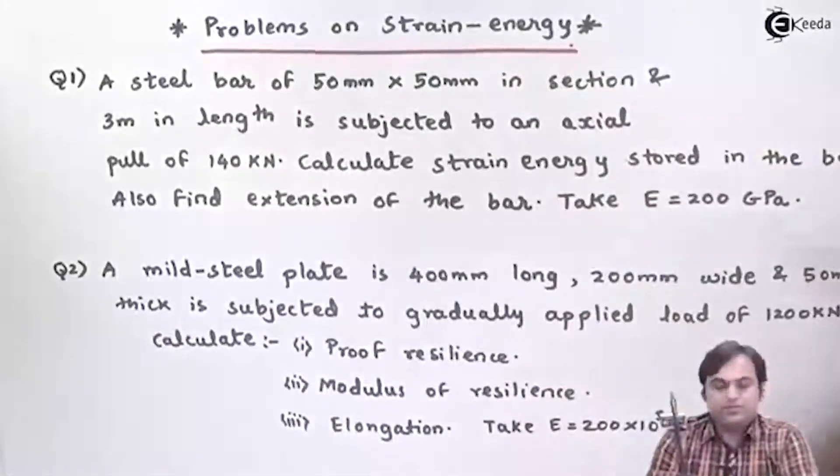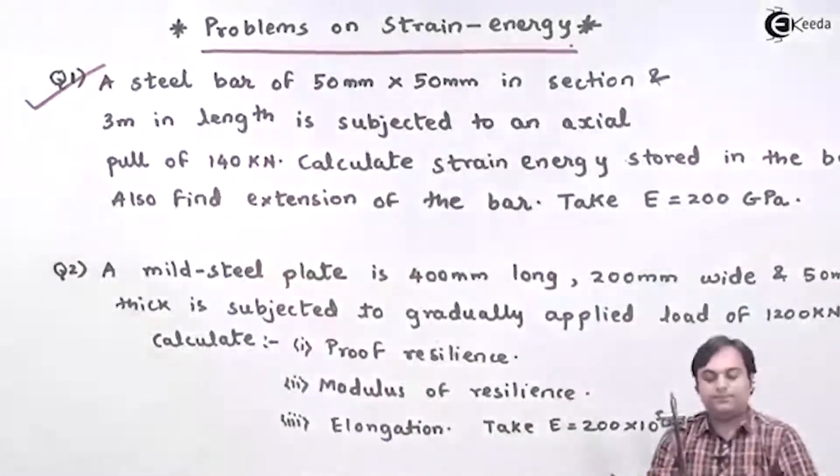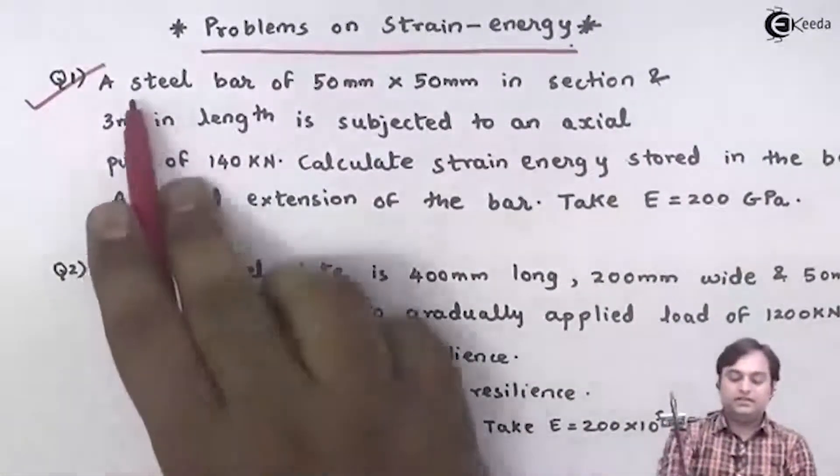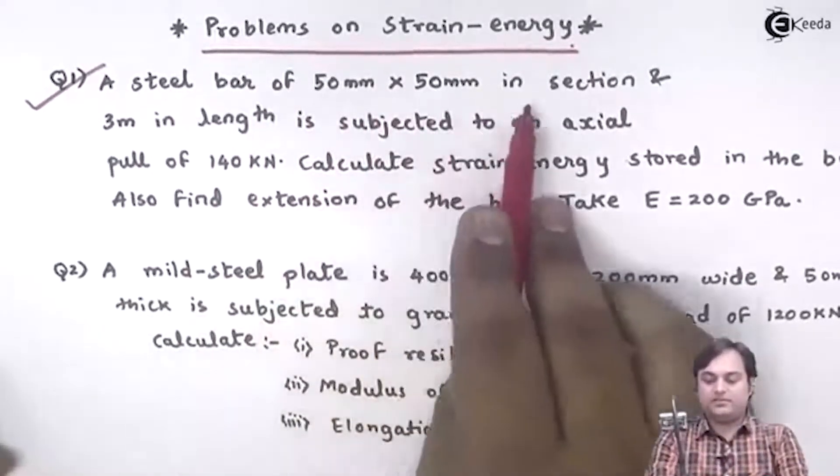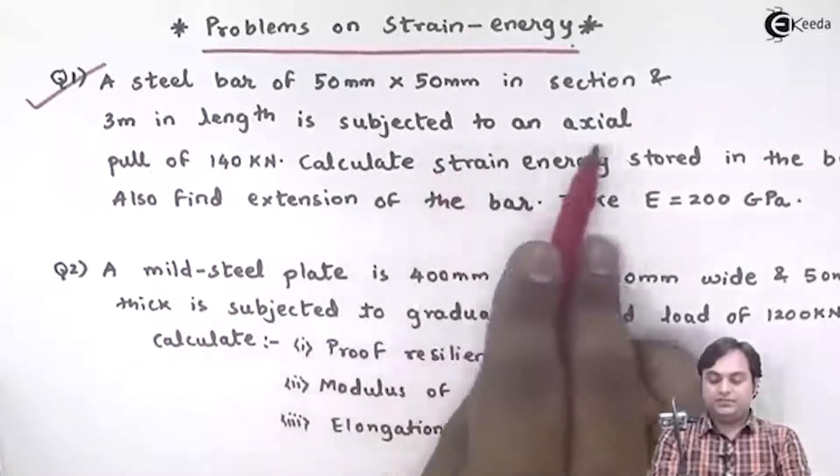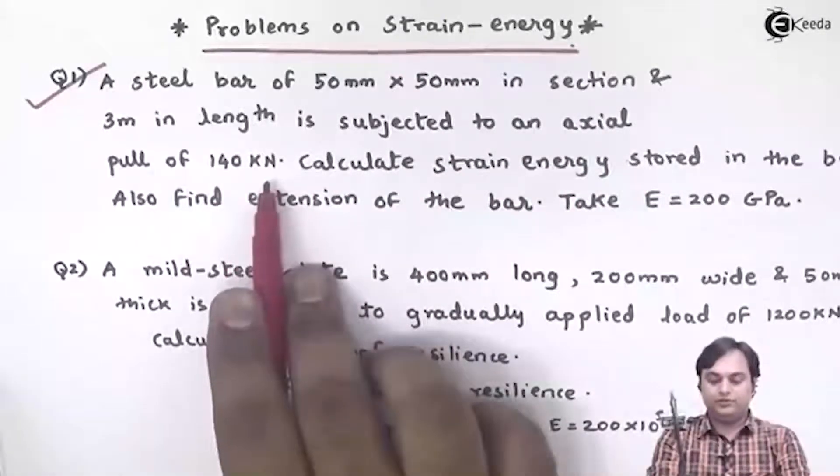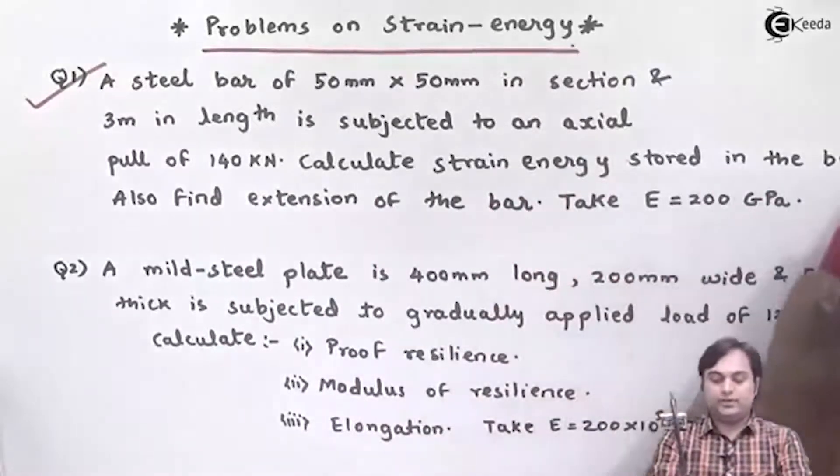Let's solve some problems based on the topic of strain energy. Here is question number one. It is given that a steel bar of 50 mm × 50 mm in section and 3 meter in length is subjected to an axial pull of 140 kilonewton. Calculate strain energy stored in the bar.